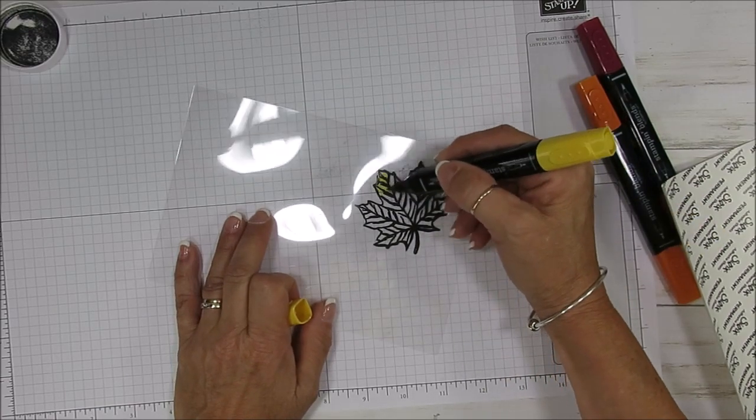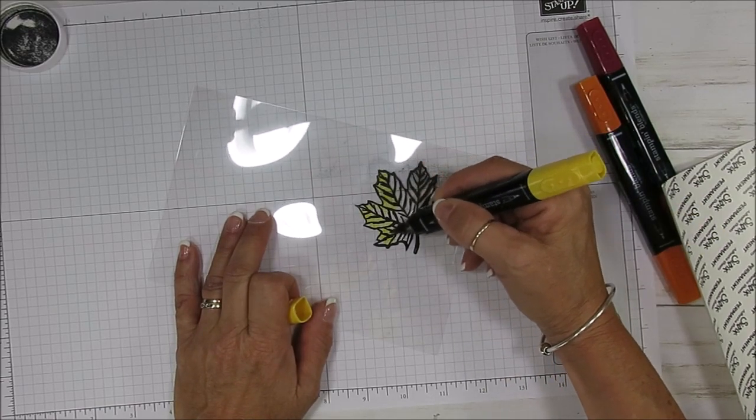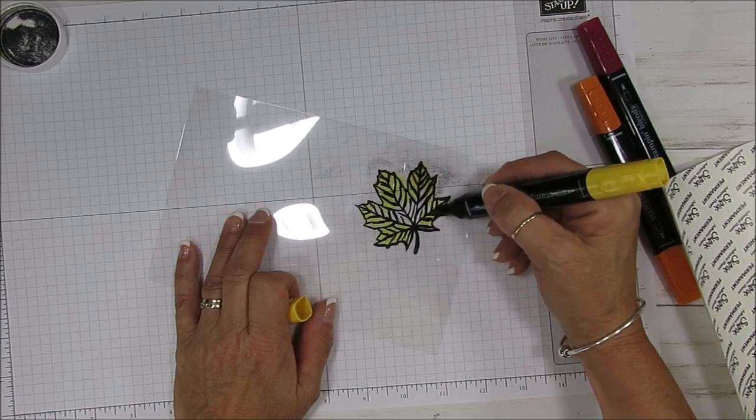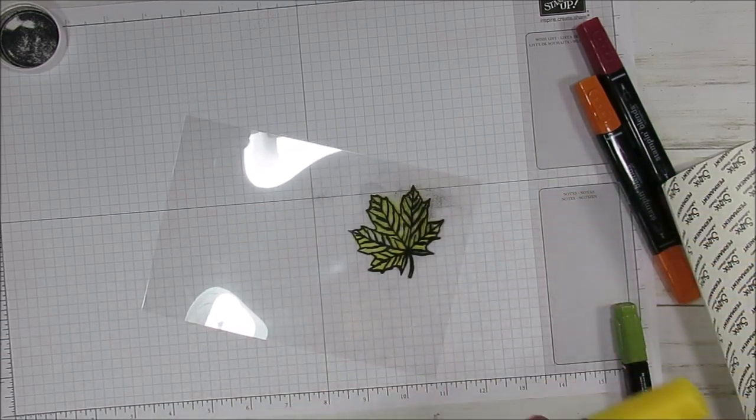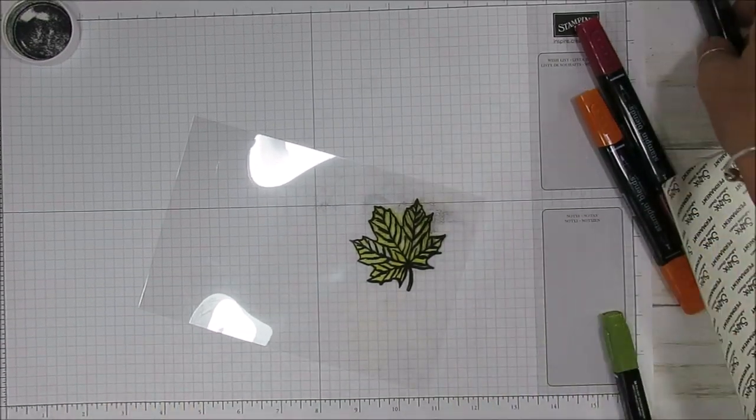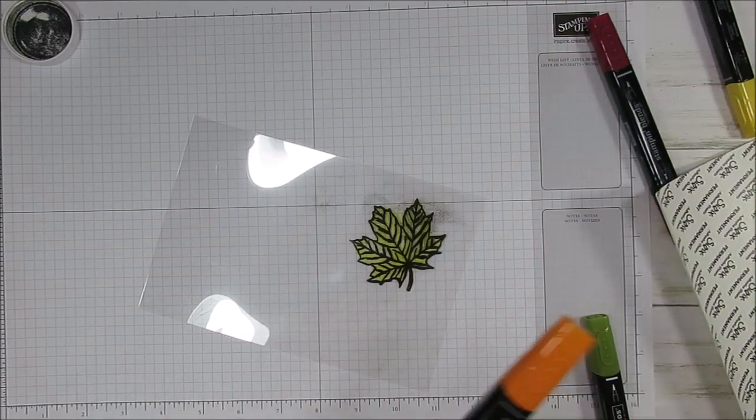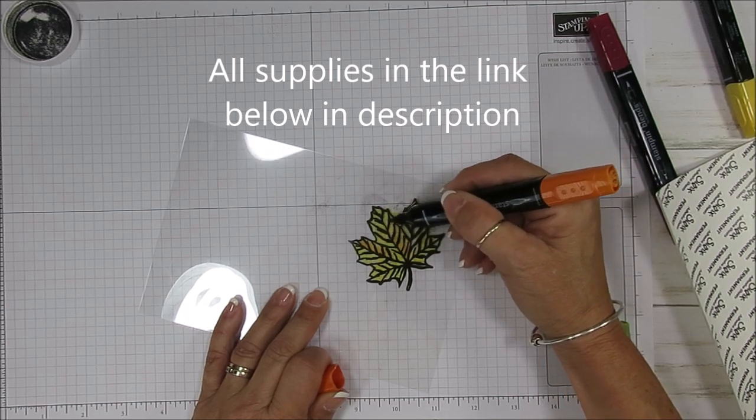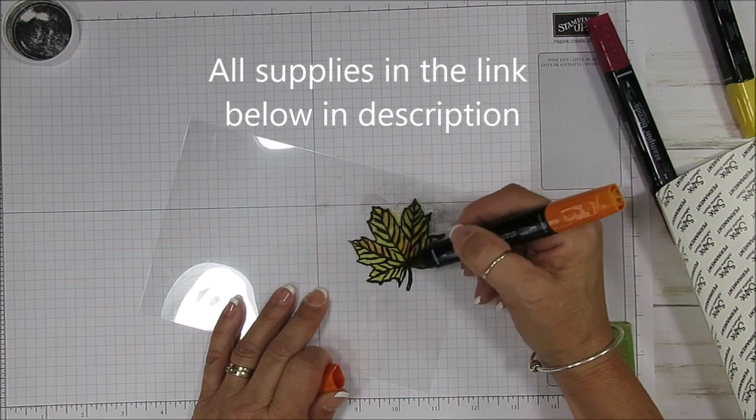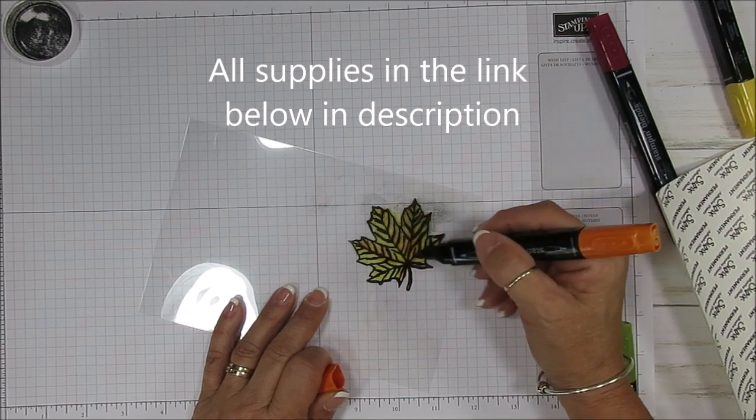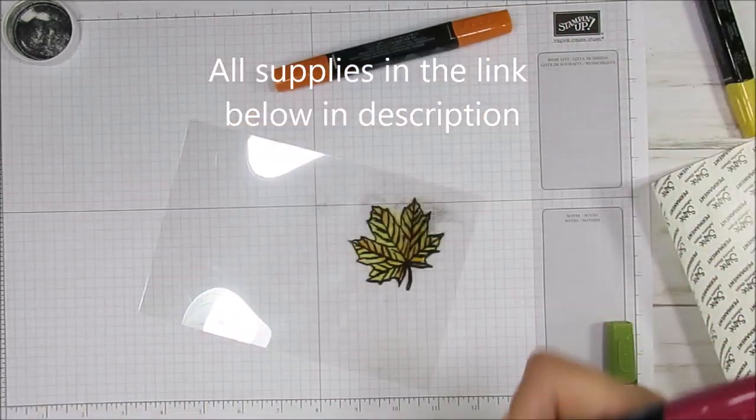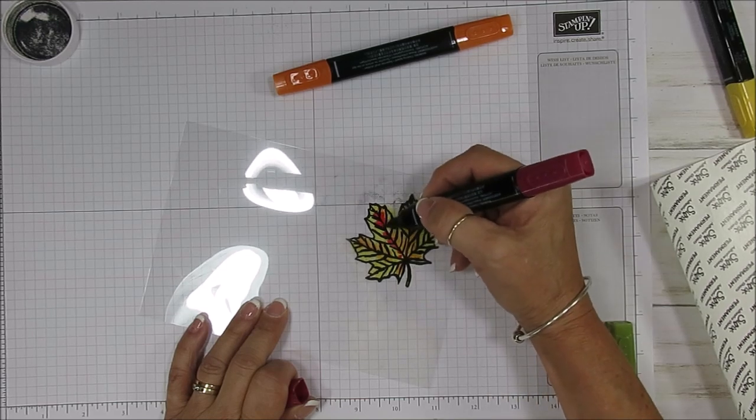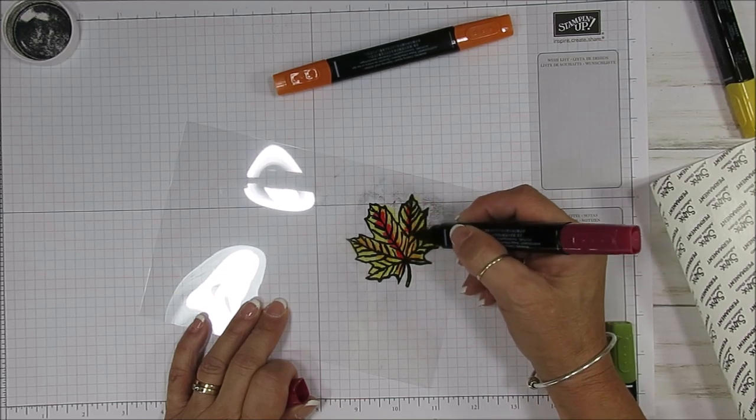This is Daffodil and it doesn't matter if it goes on the outside because we're going to cut it. I'm just adding color here and there and you see there's still some white left in there. Now I'm going to use Pumpkin Pie and add a little bit here and there. Then I'm going to use Cherry Cobbler and this is the dark one. I'm going to add just a little bit and that is very dark.